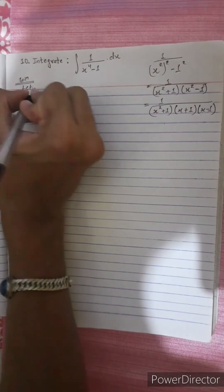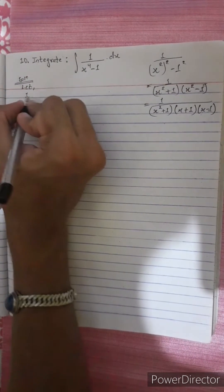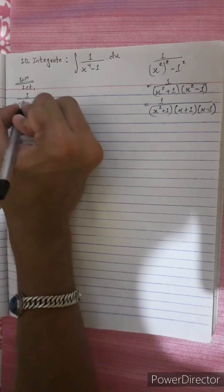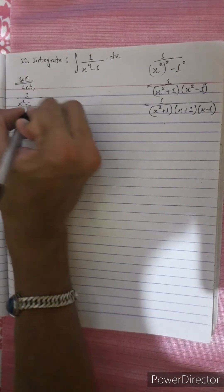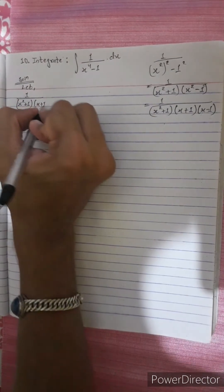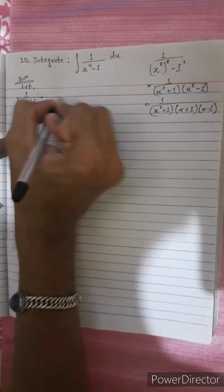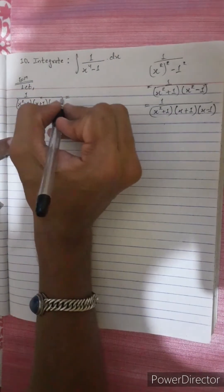Let's do it. We have 1 divided by (x² plus 1)(x plus 1)(x minus 1), which equals a partial fraction decomposition.